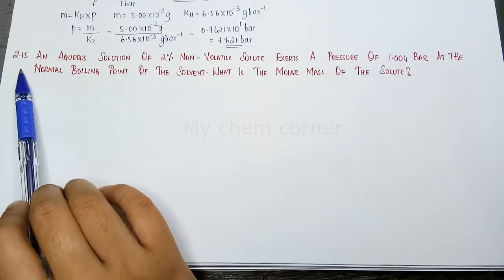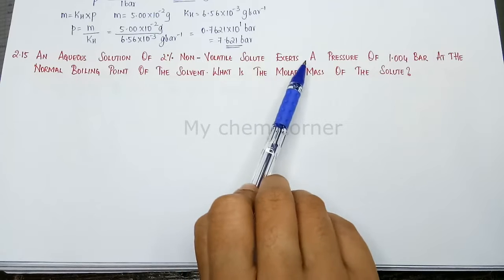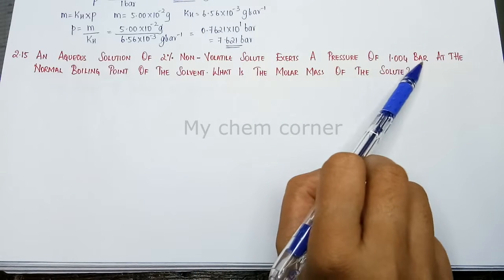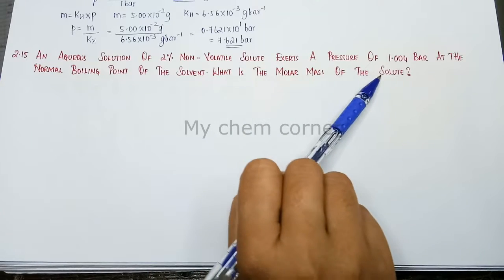Next is question number 2.15. An aqueous solution of 2% non-volatile solute exerts a pressure of 1.004 bar at normal boiling point of solvent. What is the molar mass of solute?